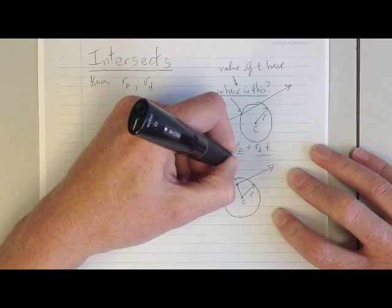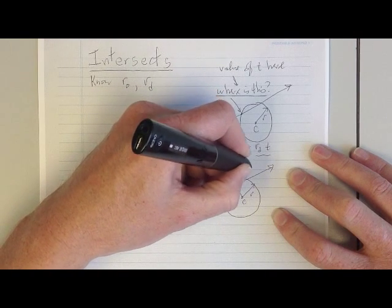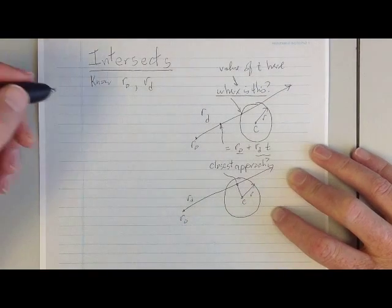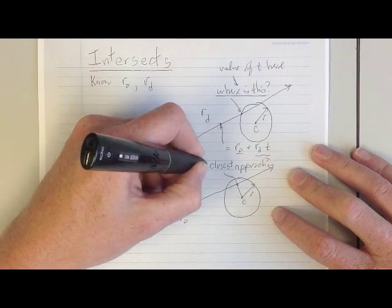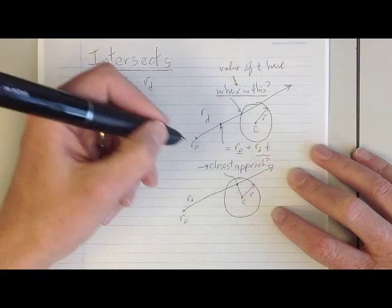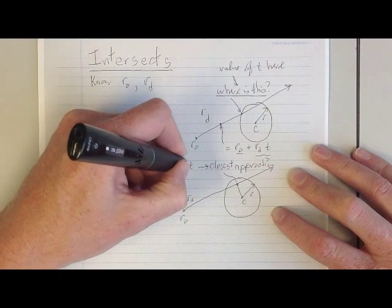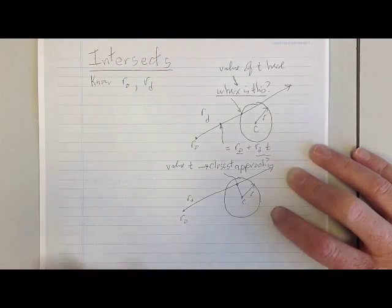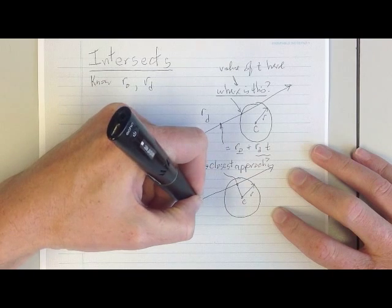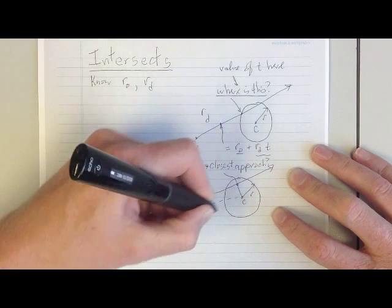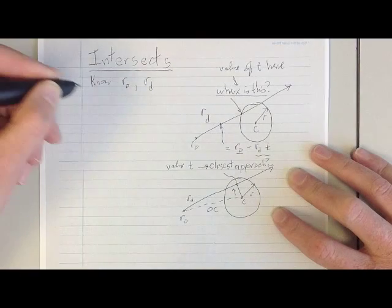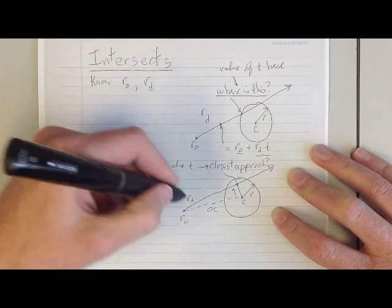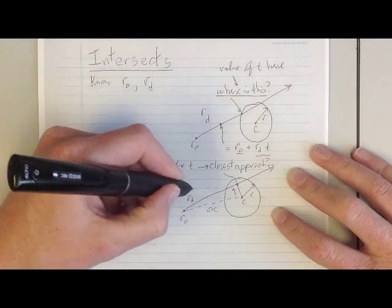In the geometric version of intersection calculation, you start off with a sphere, the center, and a radius. You've got your ray with a ray origin and a ray direction. The first thing we're going to do is figure out the value of T at the point of closest approach — the point at which the ray is the closest to the center of the sphere. At this point you don't know if the ray hits the sphere or not, so you just call this the point of closest approach.